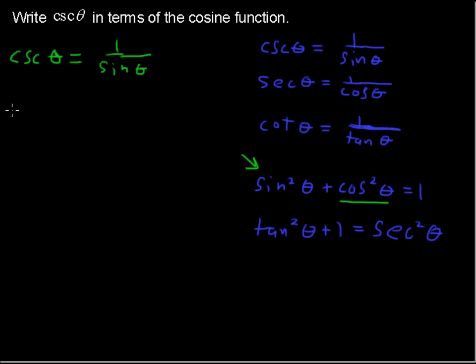Okay, now what does sine of theta equal? Well, let's look at this. Sine of theta - I said we could subtract cosine squared, let's do that. Sine squared of theta equals 1 minus cosine squared of theta, just from this identity right here.